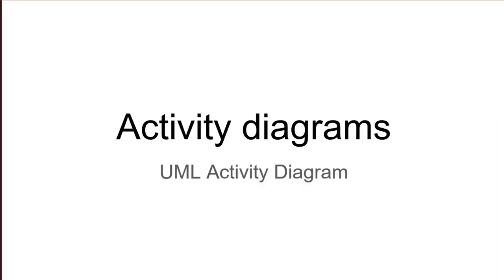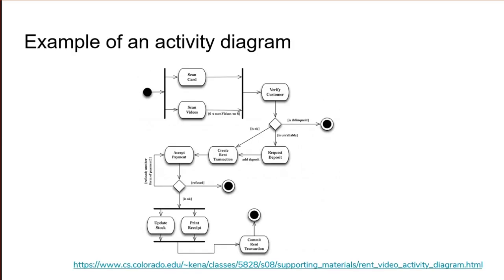An activity diagram is a nice and simple way of visually describing a process — any kind of process, not just the behavior of a computer game or any kind of program. In this video I'll describe the basics of activity diagrams, or UML activity diagrams as is their full name. Activity diagrams have been around for quite some years, as demonstrated by this example I found from the University of Colorado Boulder. It's from 2008 and describes a process for renting videos. But the example is still good and shows how easy it is to understand a process described by an activity diagram.